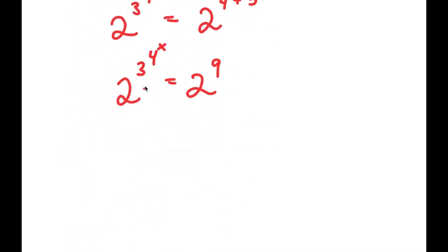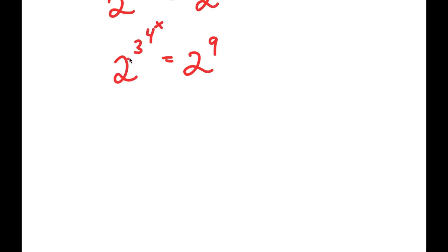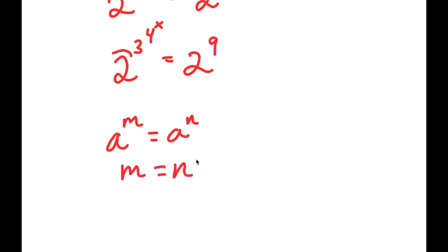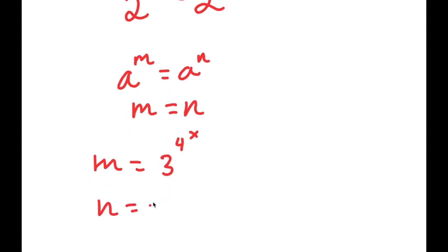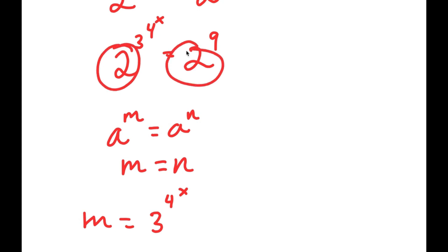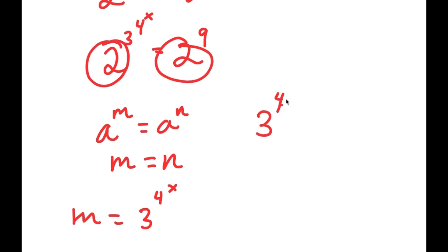So going back, we have 2 to the power of 3 to the power of 4 to the power of x is equal to 2 to the power of 9. If I have something in the form a to the power of m equals a to the power of n, this means that m equals n. So in this case, m is equal to 3 to the power of 4 to the power of x and n is equal to 9, meaning 3 to the power of 4 to the power of x is equal to 9.